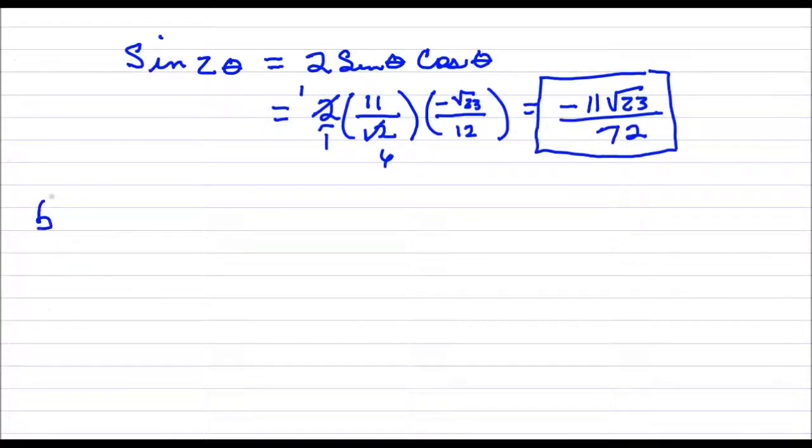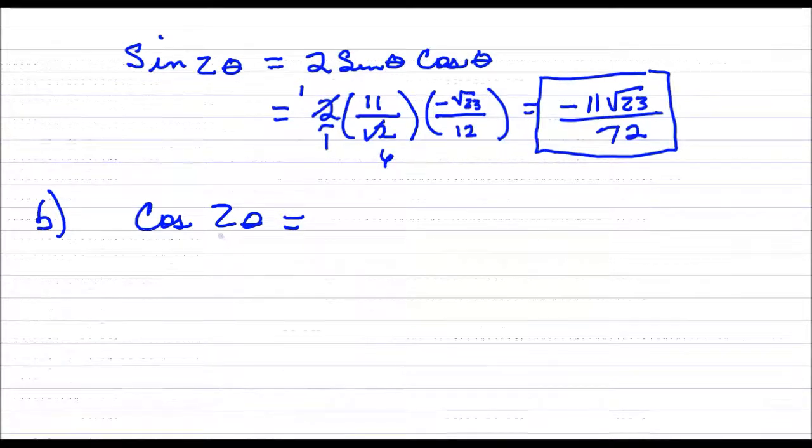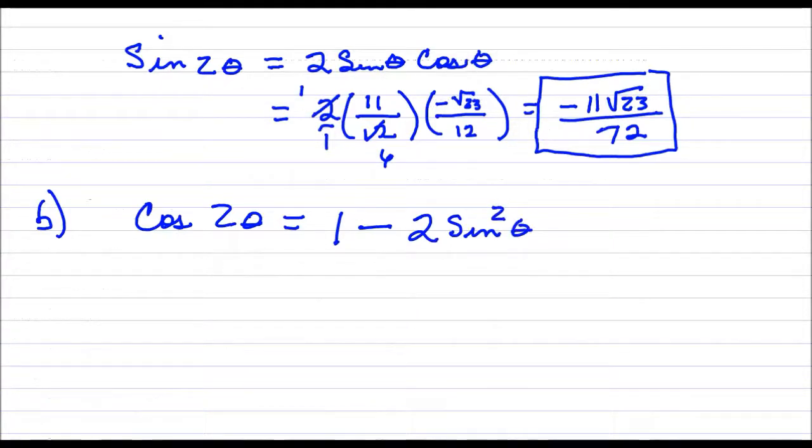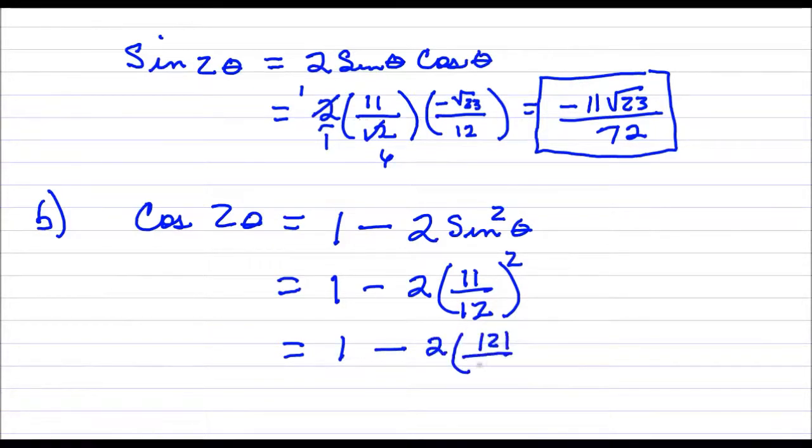And part B was to find the cosine of 2 times the angle. There are three different identities that you can use for cosine double angle. The one that I am going to use is 1 minus 2 sine squared of the angle. So that is 1 minus 2 sine was 11 over 12. I have to square that. And now all you have to do is just simplify this answer.